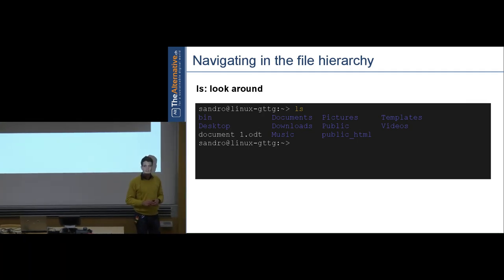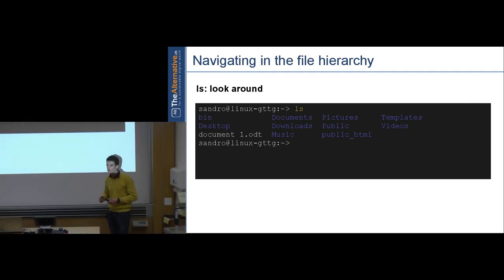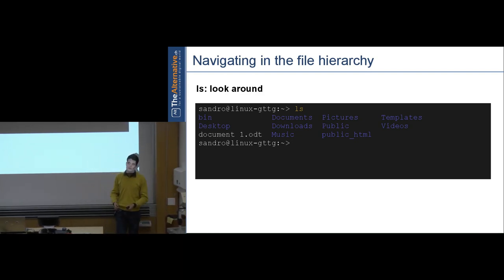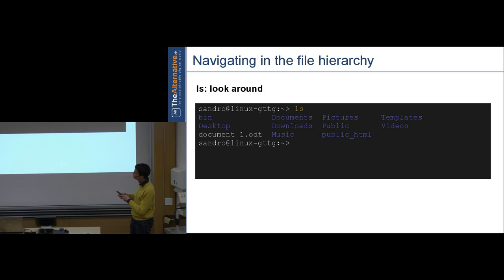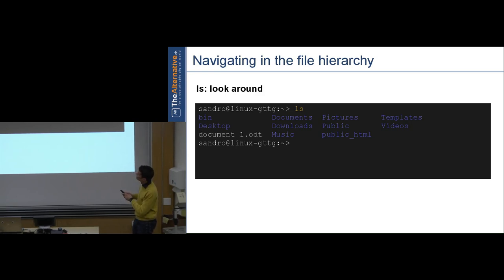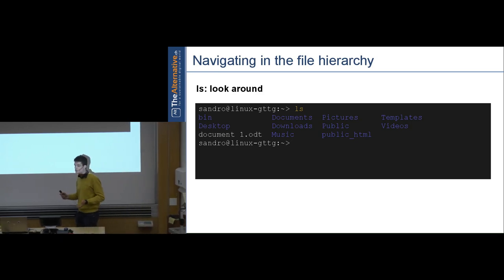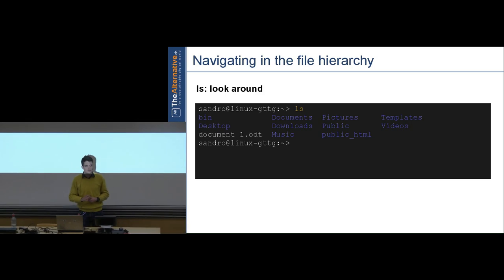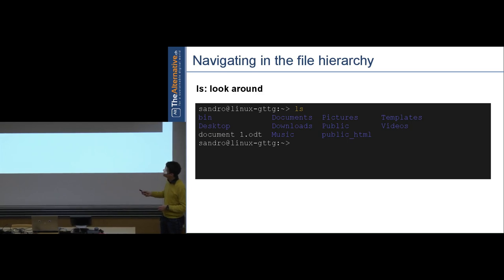Now instead of navigating blindly, we can use 'ls' — list — to show all files and folders in the current directory. Type 'ls' in your home folder and it shows you everything: folders like bin, desktop, documents, and files like 'document1.odt'. The colors depend on your setup — under default OpenSUSE, directories are blue; under Ubuntu it'll just be white.